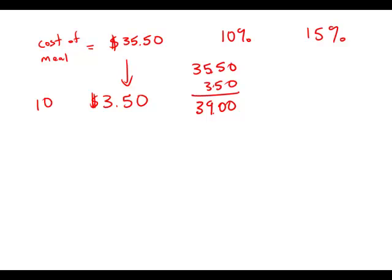So if this is 10%, half of that would be 5%. Well, half of $3.50 is $1.75. I've already added 10%, so now all I have to do is add another 5%, $1.75. And so this is about $40.75, approximately.